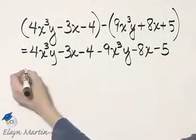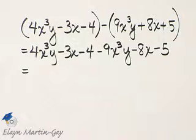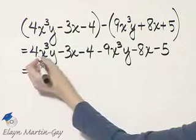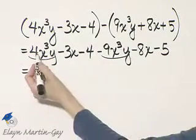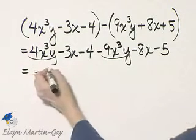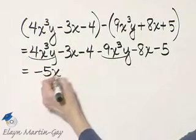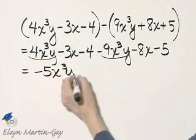And now we're simply looking for any like terms that can be combined. Notice this term and this term. Those are like terms. So I have 4 minus 9, that's negative 5, and it will be x cubed y.